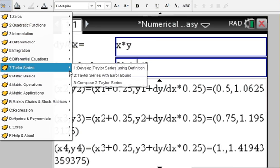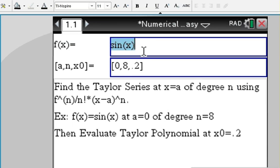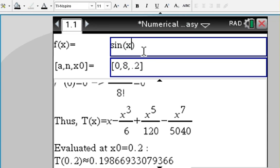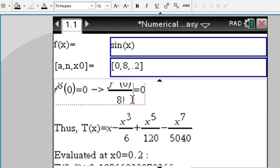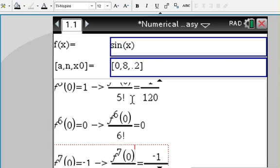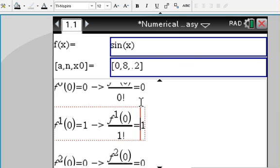Taylor series—very neat feature. Enter your function, such as sine of x, develop at a equals zero using eight terms. That means degree eight—that's actually nine terms, degree eight. Then you can use this Taylor polynomial to evaluate at point 0.2. Let me show you.